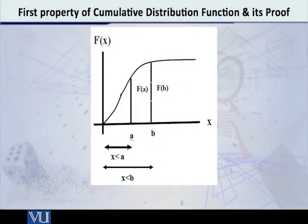As you can see on the screen, if on the x-axis we have A as a number which is on the left side of the number B, then if you look at the ordinate corresponding to A—because this is capital F of X graph in front of you—the ordinate at A gives you capital F of A, and at B gives F of B.